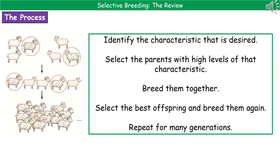The way we actually carry this out has five key steps. The first step is we identify the characteristic that we desire or want. Secondly, we then select the parents that have got high levels of that characteristic. On the left you can see a range of different sheep, and we want woolly sheep, so we pick the two woolliest.